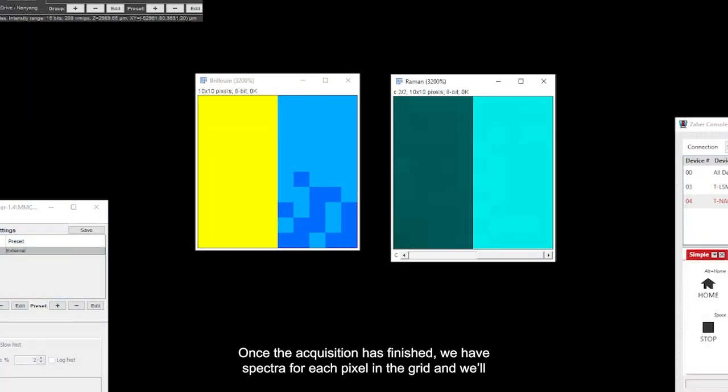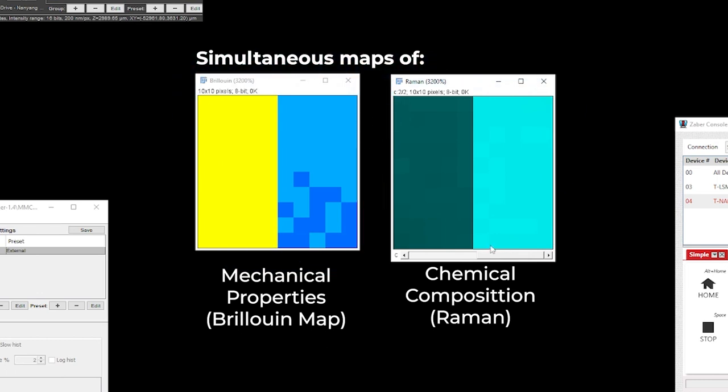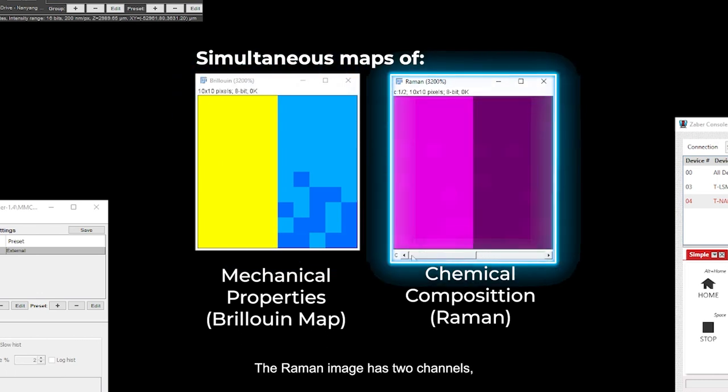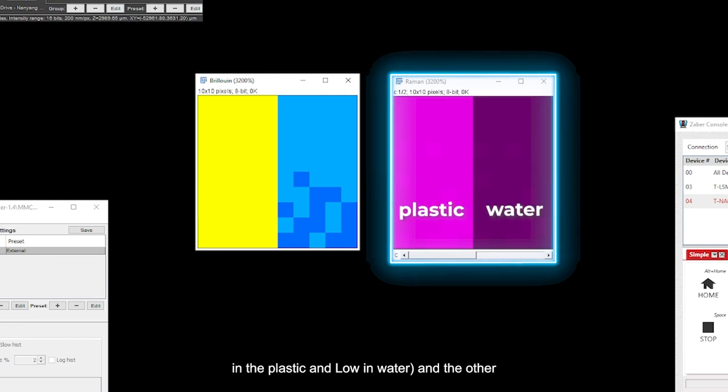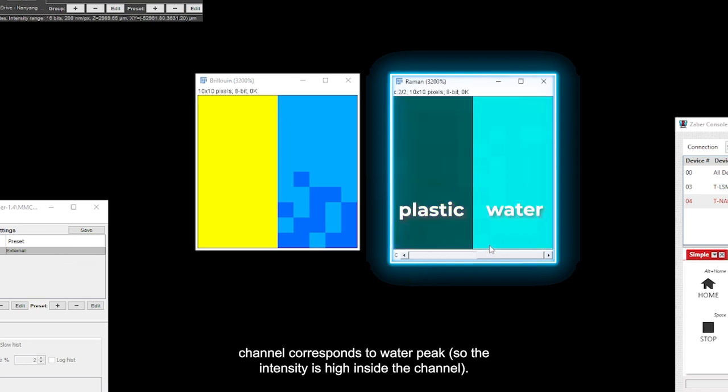Once the acquisition has finished, we have spectra for each pixel in the grid and will run a script to construct images from them, a Raman and Brillouin map. The Raman image has two channels, each corresponding to the integrated spectrum in different spectral bands. In this case, one channel corresponds to CH2 stretching vibration. It shows high intensity in the plastic and low in water. And the other channel corresponds to the water peak, so the intensity is high inside the channel.